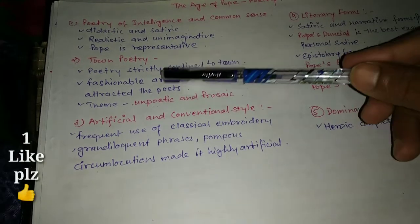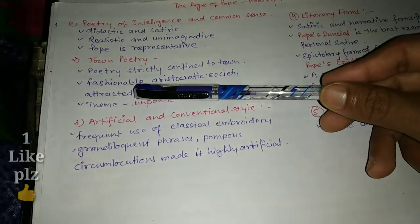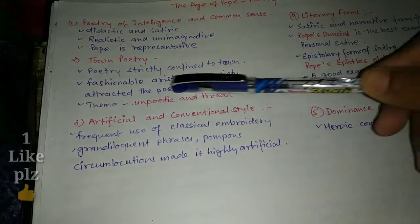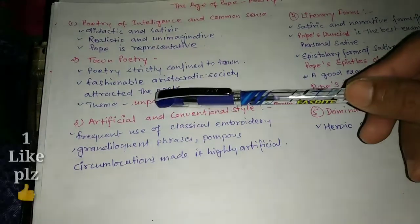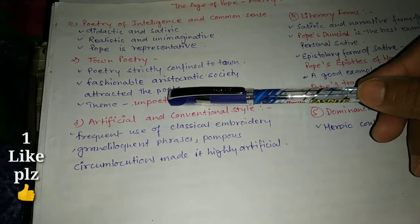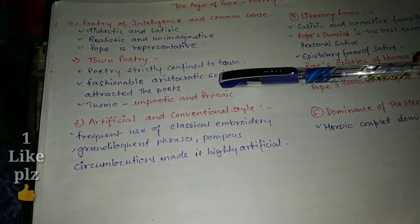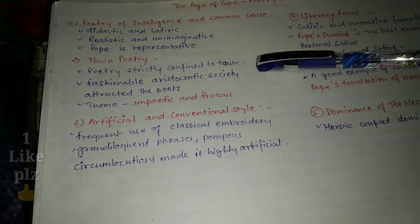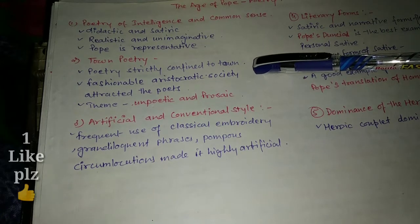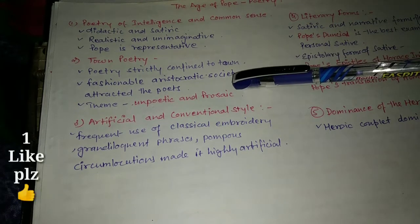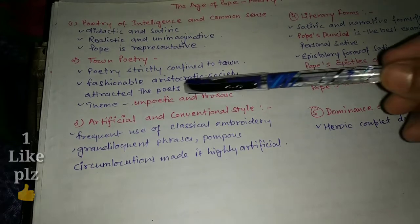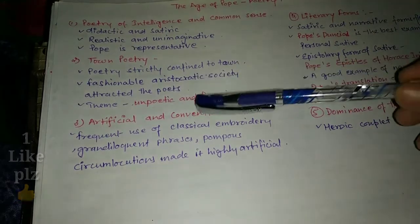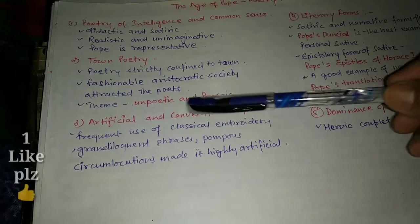Town poetry — poets were attracted towards fashionable aristocratic society. Poetry is strictly confined to town, and the theme was unpoetic and prosaic. Prosaic is characteristic of Pope's poetry because poets were following the classics strictly.